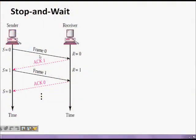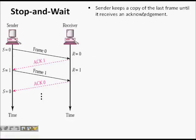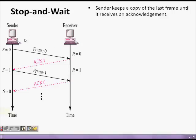In the stop-and-wait protocol, there is a sender and a receiver, and we look at the time axis where time increases. I send one frame and then wait for an acknowledgement that it has been received properly before sending a new frame. So I send frame 0.